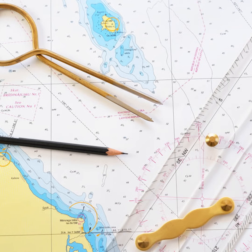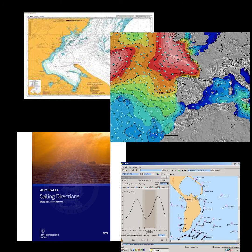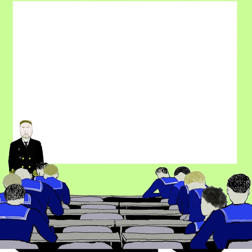In practical navigation, information about currents in a particular trading area can be found in nautical charts, sailing directions, and weather forecasts. Local currents should always be taken into consideration during navigation.